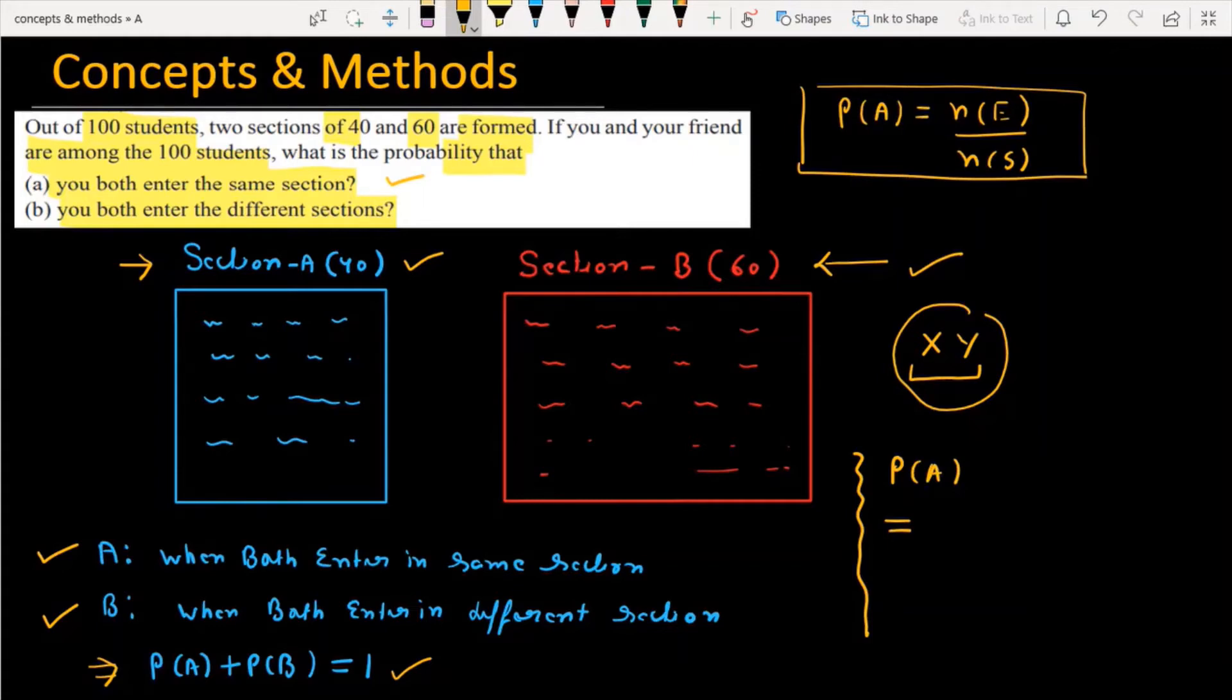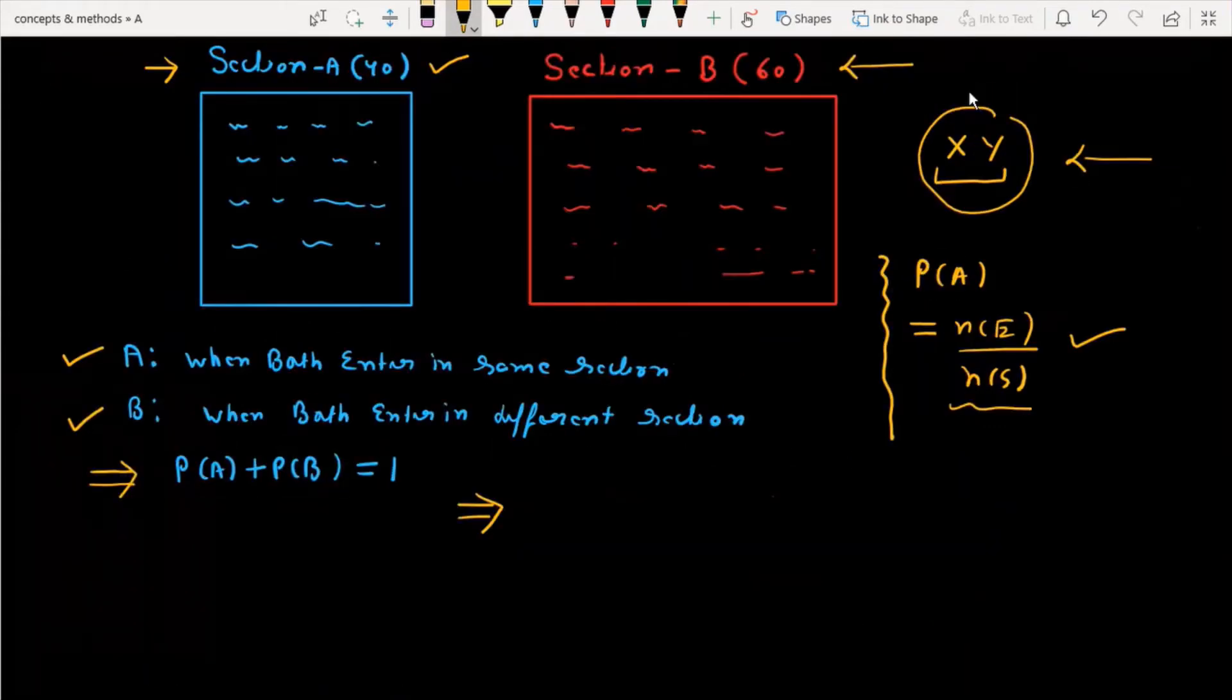First of all, I will talk about the formula, that is n(E) over n(S). My first motive is to find out the sample space, the cardinal number of sample space. Sample space means total possible cases. Now, if these two kids are X and Y, these two kids can be among the 100 students. If I talk about maximum possible cases, then that must be 100C2, and that is the value of the cardinal number of sample space.